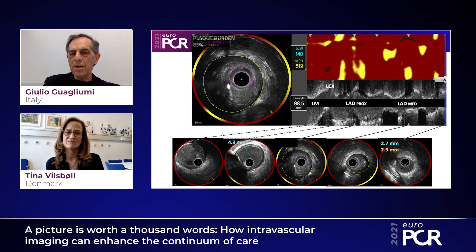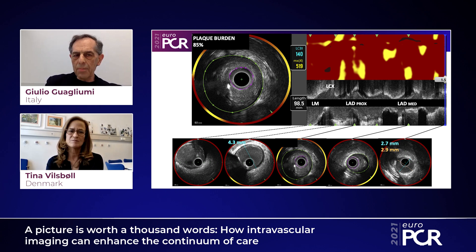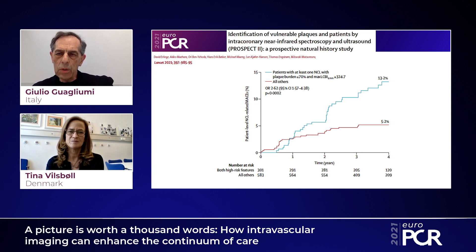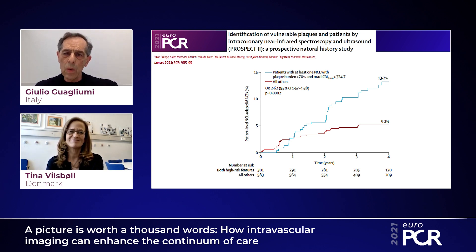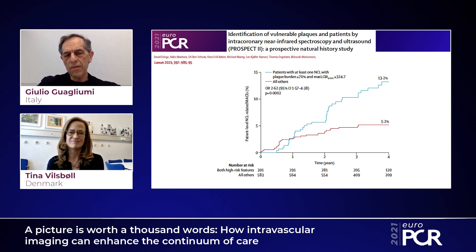We are making calculations and measurements about the risk profile of this non-culprit lesion in terms of plaque burden and lipid-rich plaque content. We conducted a lot of studies — many in Denmark — including the PROSPECT 2 study, where we discovered that the remaining potential risk for the patient is determined by the combination of plaque burden and the amount of lipid. As you might see in follow-up, the outcome can be completely different.